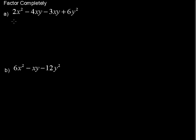Factor completely: 2x squared minus 4xy minus 3xy plus 6y squared. When we see more than three terms, that's usually a clue that we can factor by grouping.